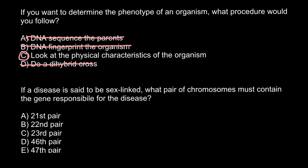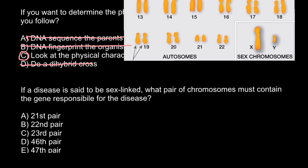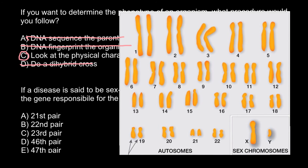The next question: if a disease is said to be sex-linked, what pair of chromosomes must contain the gene responsible for the disease? There are five answers to choose from. If you look at this human karyotype, you can count that we have 23 pairs of chromosomes. 22 pairs would be autosomes, and the last pair would be the sex chromosomes — the 23rd pair.